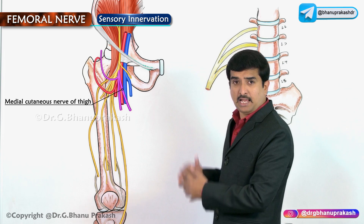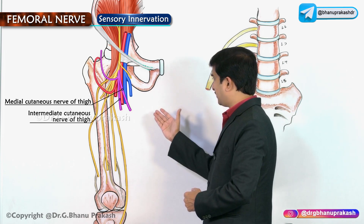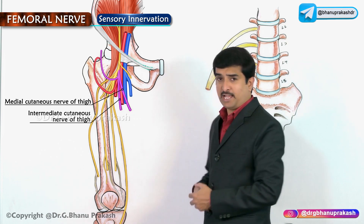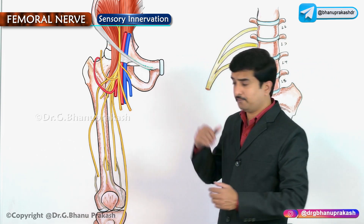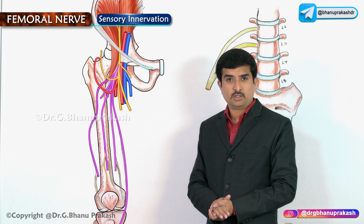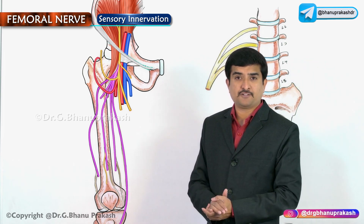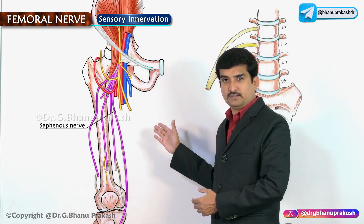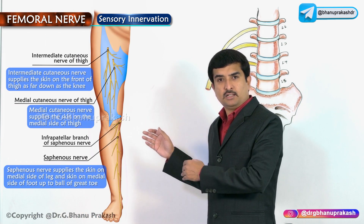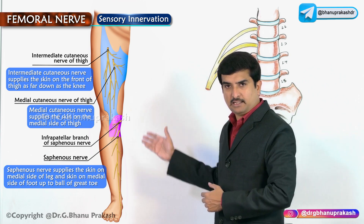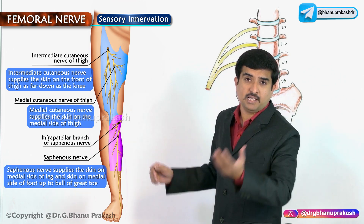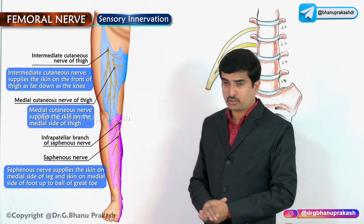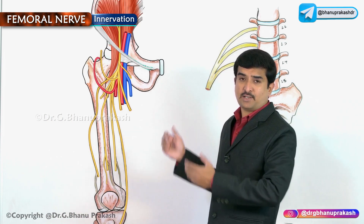For sensory innervation, the anterior division gives off the medial cutaneous nerve of the thigh and the intermediate cutaneous nerve of the thigh. The posterior division gives off the saphenous nerve, which supplies the skin on the medial side of the leg and the medial side of the foot up to the ball of the great toe.